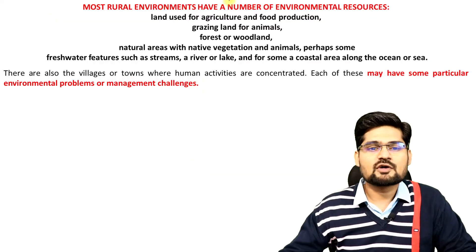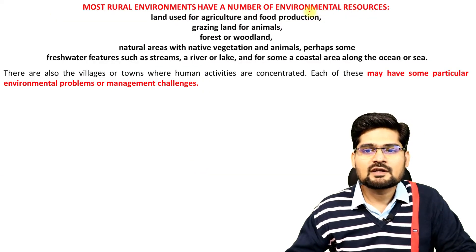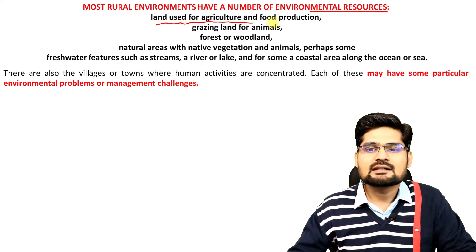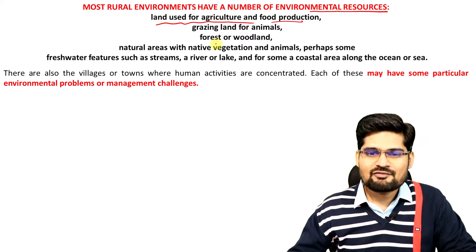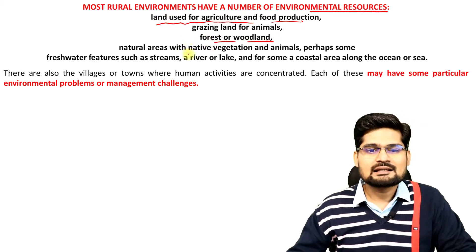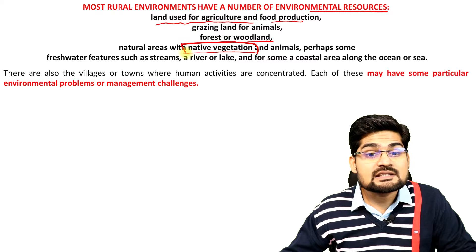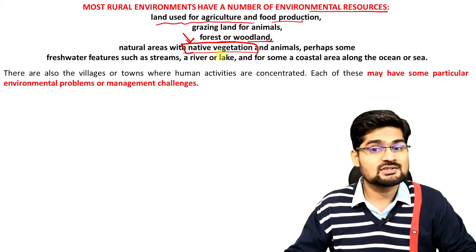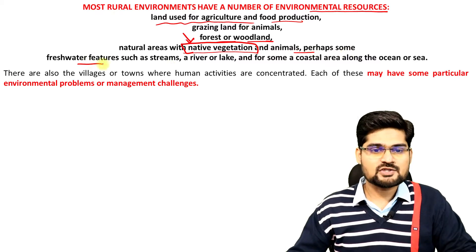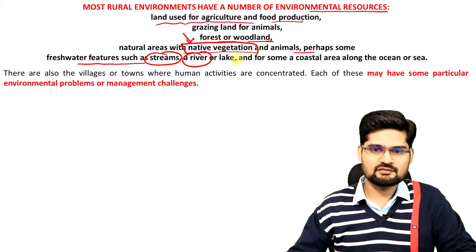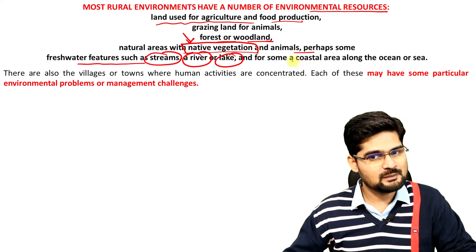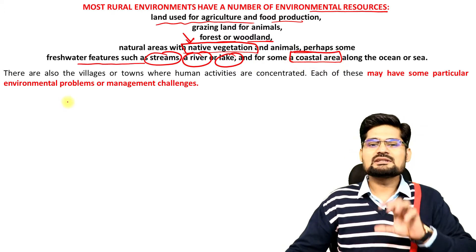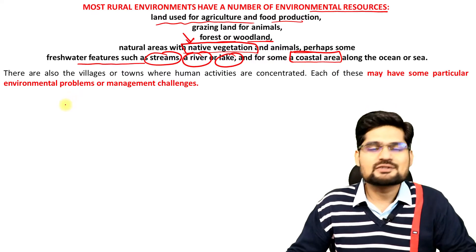Most rural areas or rural environments will have a number of environmental resources. These include land used for agriculture and food production, forest or woodland areas, natural areas with native vegetation — and remember, native vegetation is very important — indigenous vegetation and animals, fresh water features like streams, rivers, lakes, and also coastal areas if it is a coastal village or coastal rural area.